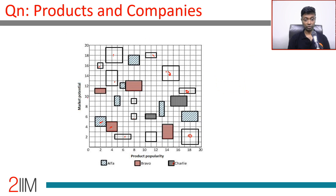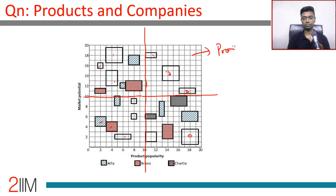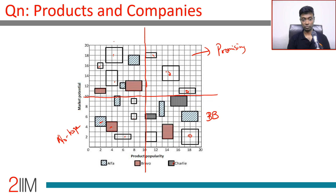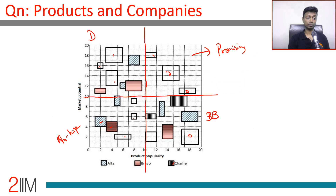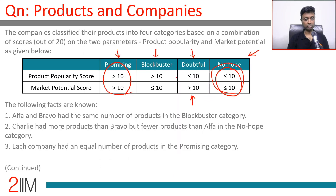These two quadrants are easy — Promising and No Hope — and 10 is the midpoint. So effectively, drawing lines at 10 on each axis breaks the chart into four quadrants. The top-right is Promising, the bottom-left is No Hope, the bottom-right is Blockbuster (high popularity, lower market potential), and the top-left is Doubtful (market potential is there, but not a popular enough product).